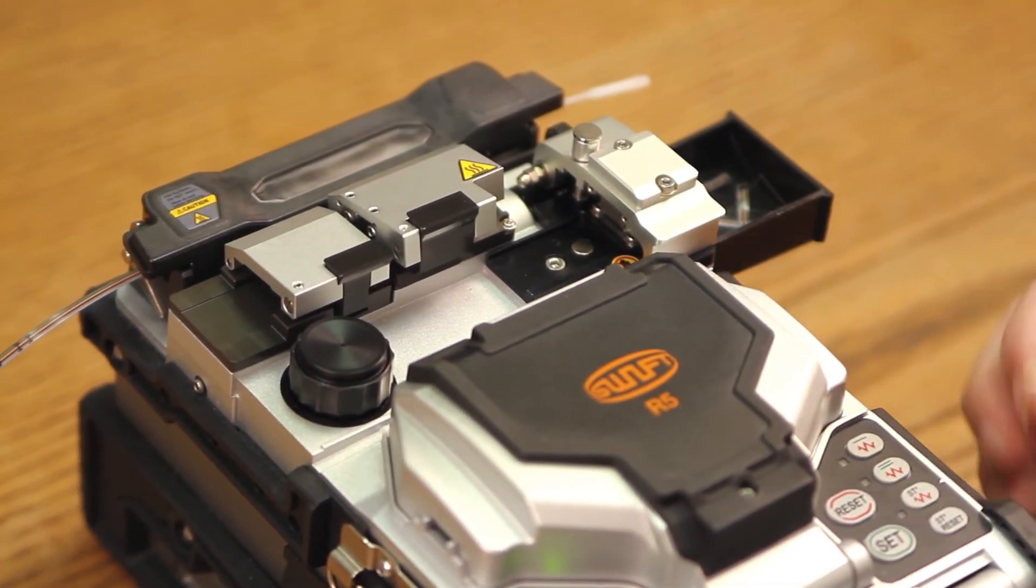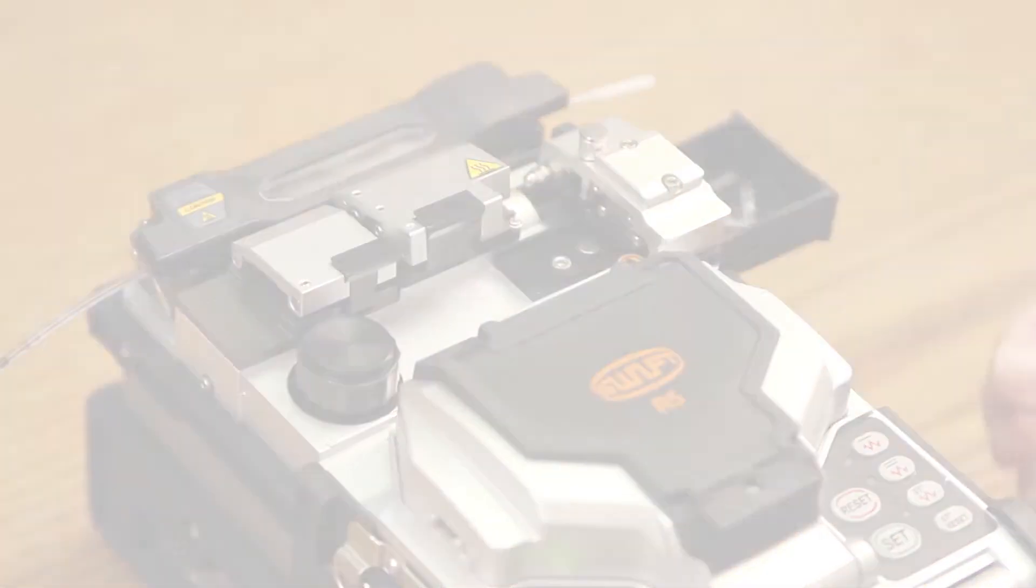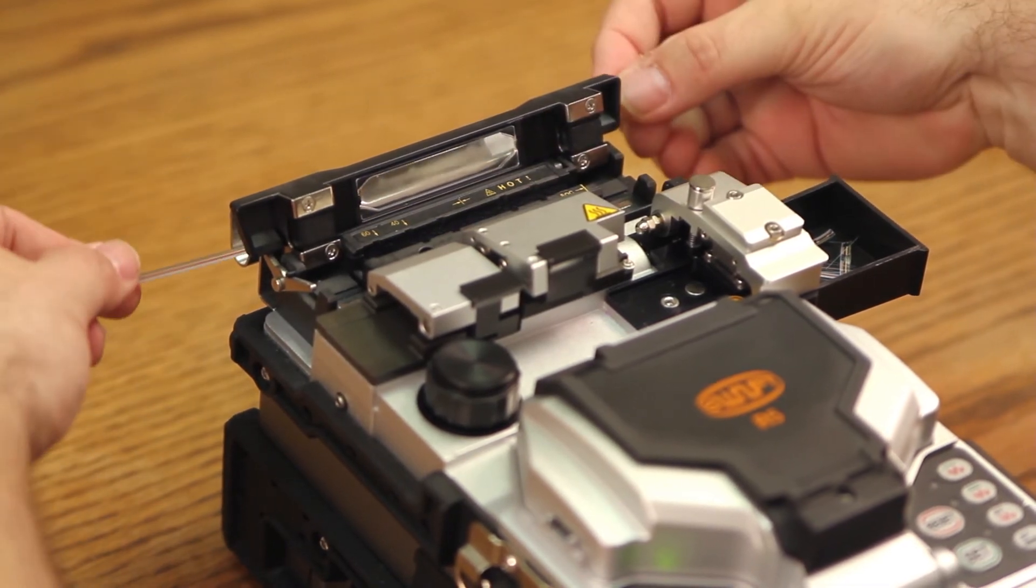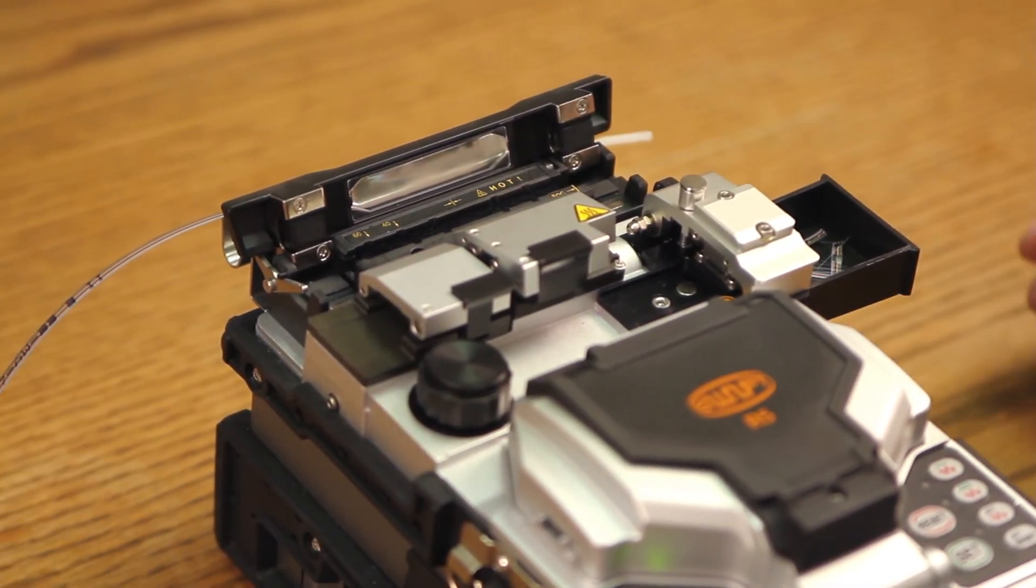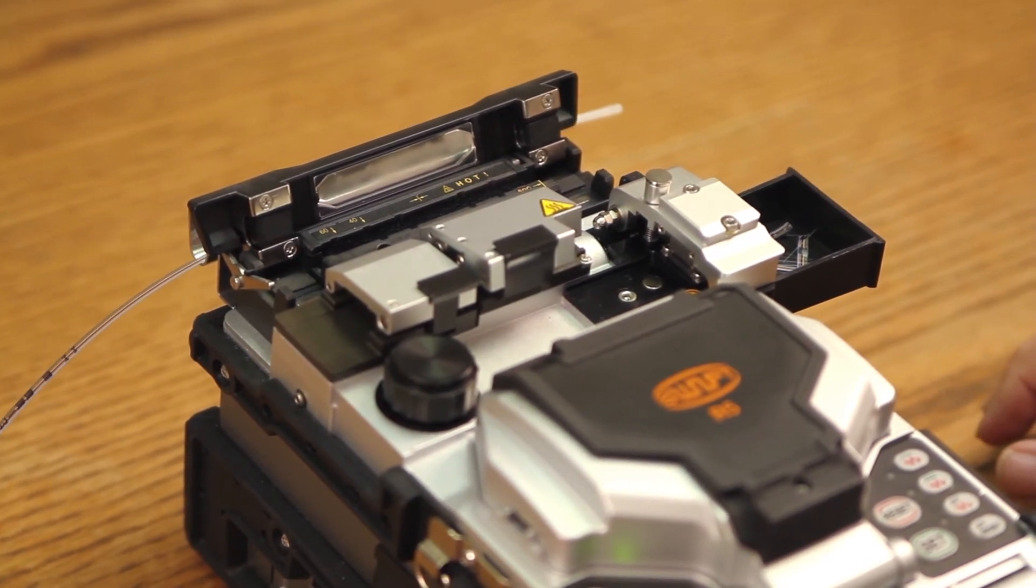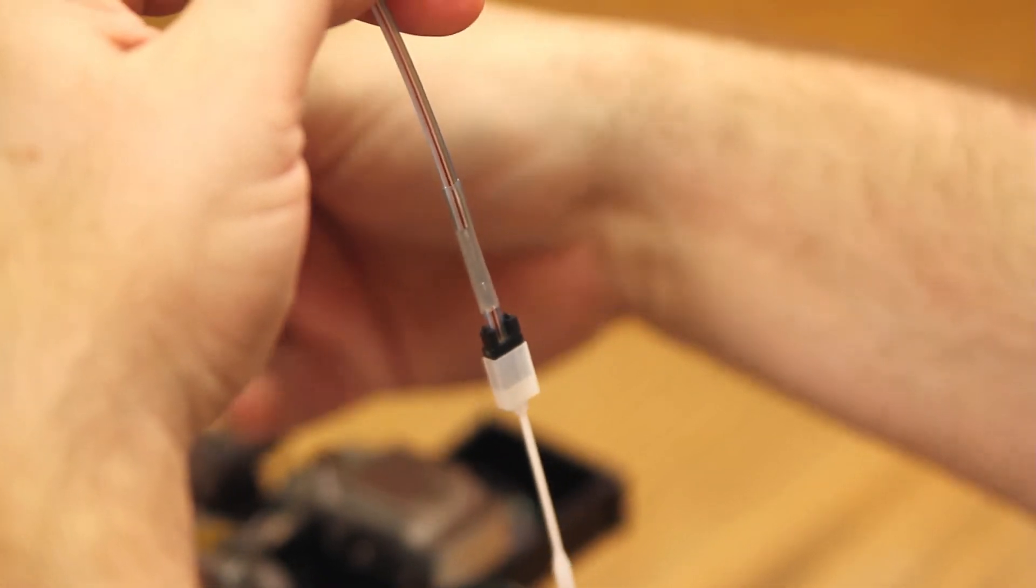Once your oven turns off and your light goes out, open your oven. Remove and place into your cooling tray. Allow the heat shrink to cool for approximately 10 seconds. Once the cooling has completed, finish assembling your connector.